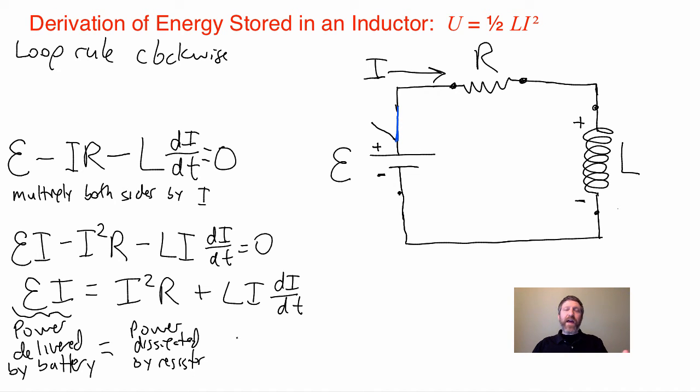Now that is all equal to the sum of two other powers. This is the power which is dissipated by the resistor. In other words, that is the rate of energy being converted into thermal energy. It just goes away into the atmosphere. Well, what the heck is this? This is the power which is stored in the inductor. It's being stored in there. As this current increases, you can see as I increases, more and more energy per unit time is stored in the inductor.